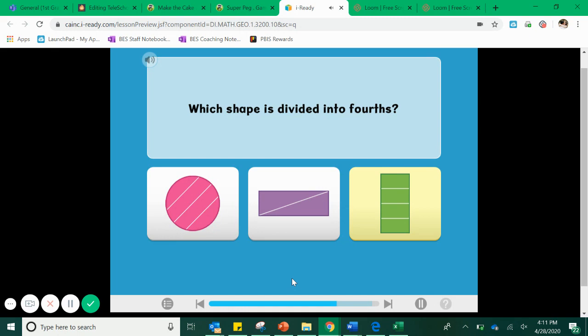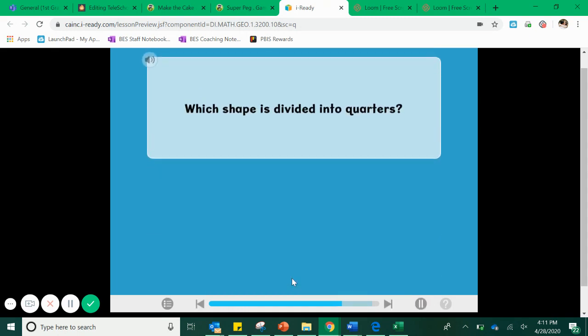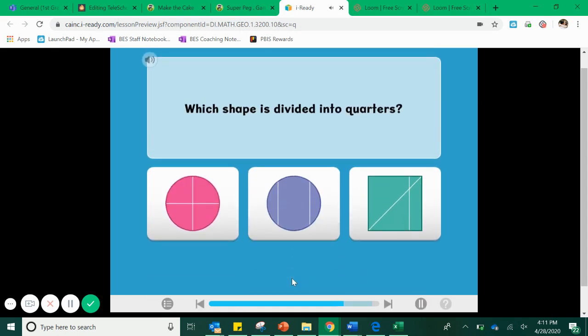We're going to do one more question. I don't want to answer all of them for you. That'll give all of the magic away. And then you guys will have a chance to go back in through a near pod link and you can answer these questions yourself. Last question. Which shape is divided into quarters? Oh that's easy. We just answered a question about fourths. We said fourths and quarters are the same thing. That means that a shape is divided into four equal parts.